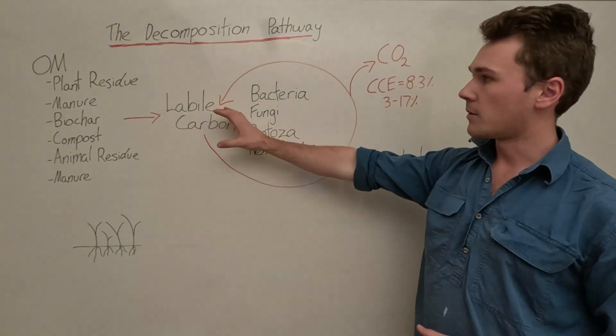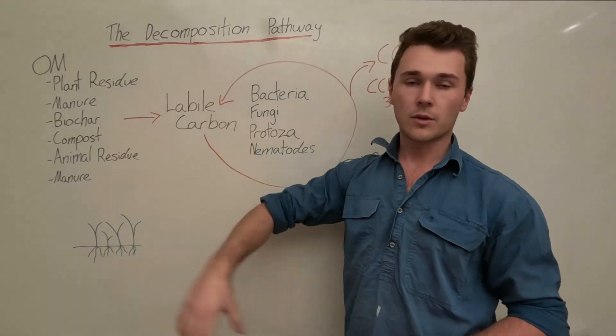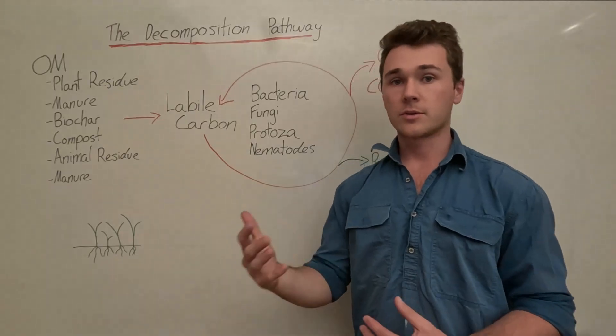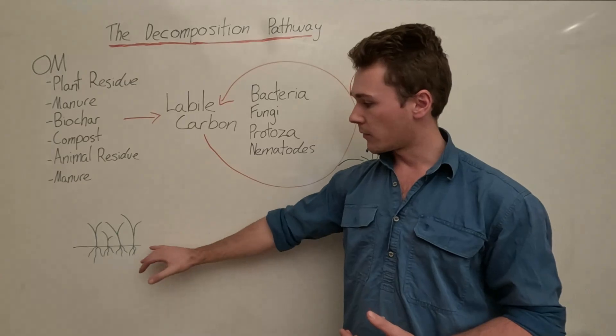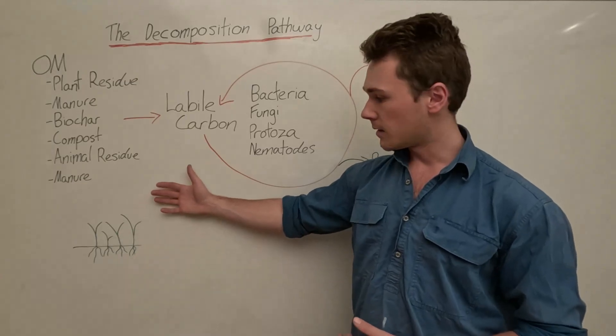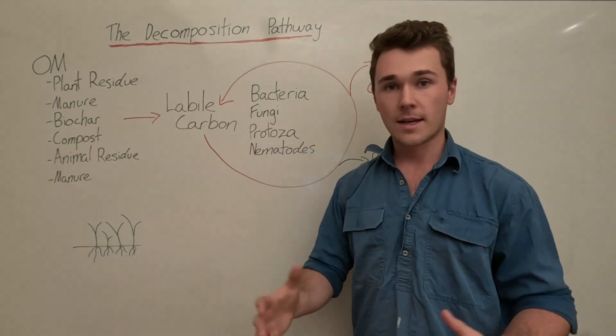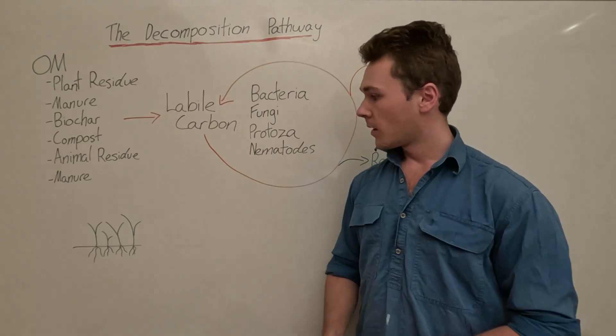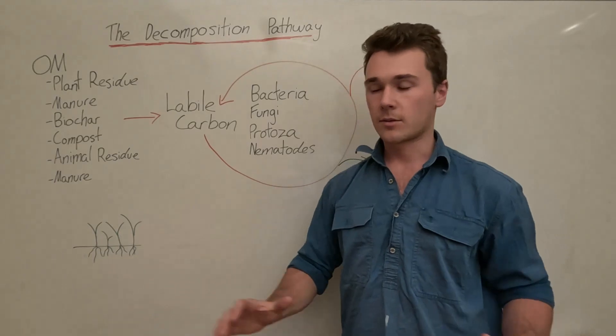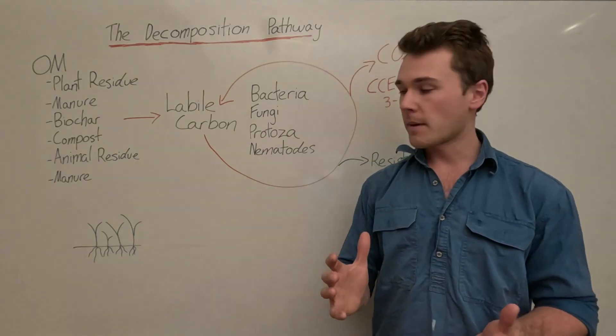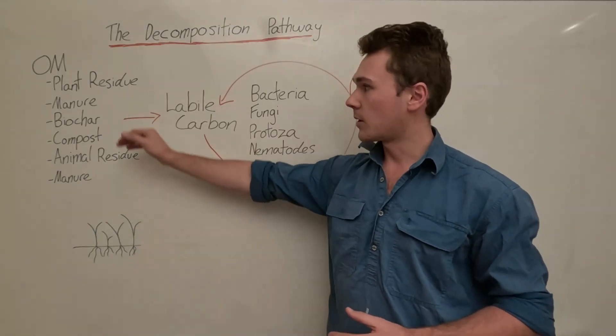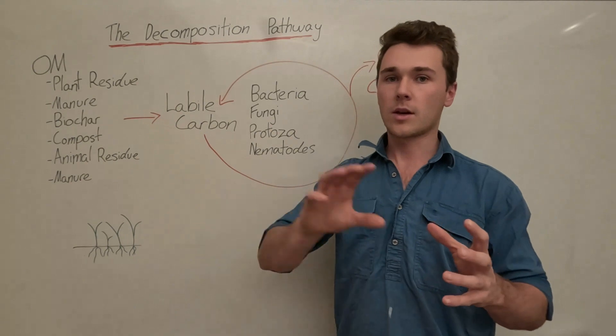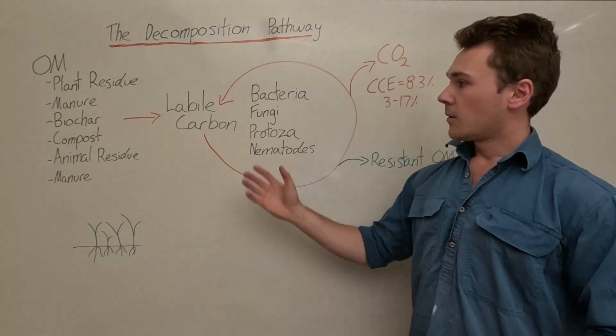We have labile carbon which comes from organic matter. If you grow a cover crop for example and terminate it, which is what we have here - we have the roots growing, we have the above-ground biomass of the leaves, the stem. We come along, crimp it down or terminate it, that is going to be organic matter. If we have livestock come in, they're going to eat it, we still have the roots, we're going to get manure. All that's going to cycle through the soil, which is our labile carbon.